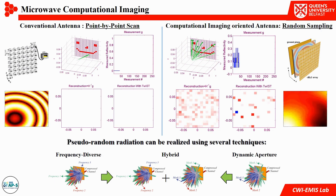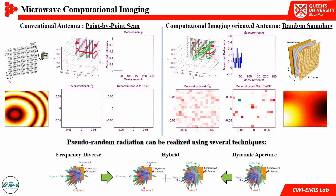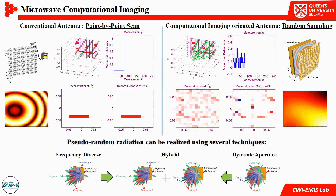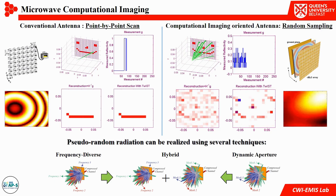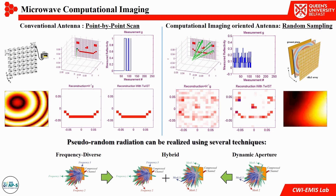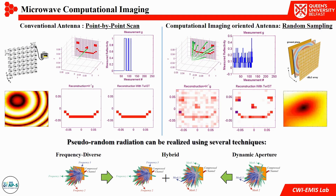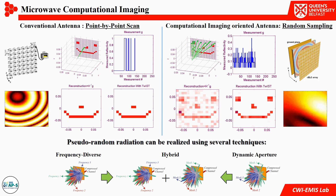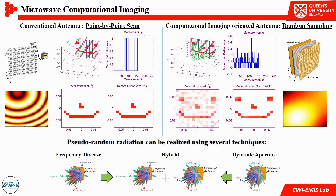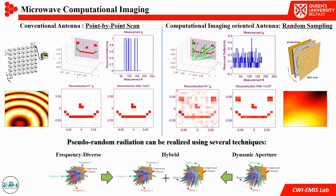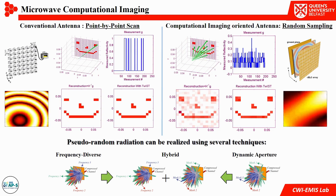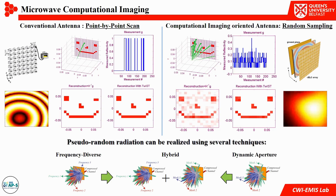In conventional Microwave Imaging Systems, reconstructing an image requires a raster scan of the scene point by point. In contrast, Meta Surface MCI encodes the scene with spatially random radiation patterns, and the back-scattered data is compressed into one channel. It is a typical inverse scattering problem, and it can be solved using compressed sensing algorithms.